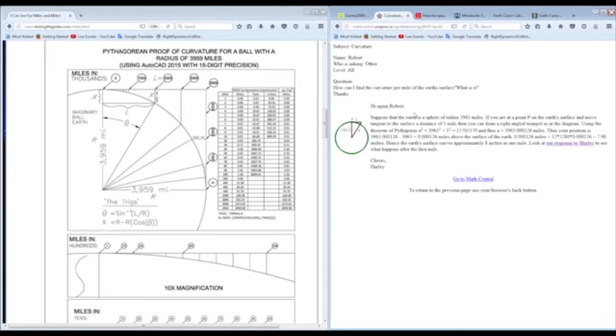This is a website called mathcentral.uregina.ca. You see the URL here. So they're talking about how can I find the curvature per mile of the Earth's surface, and they give an answer right here. After you do all the long-form math, it ends up being 7.98 inches, or like we said, everybody's just kind of rounding it up to 8 inches per mile. But then it says, look at our response to Shirley to see what happens after the first mile.